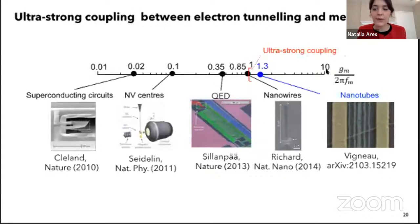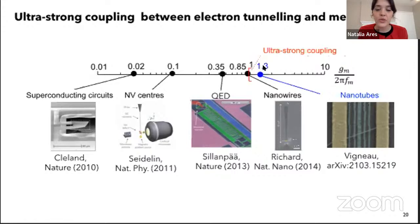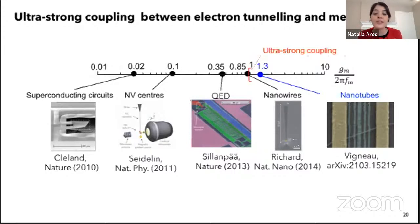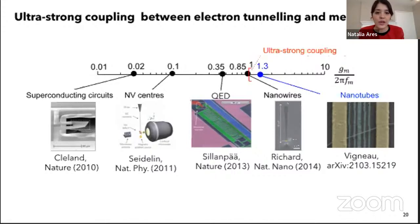We have calculated and since improved this coupling strength value. The key metric is the ratio of the coupling strength to the mechanical frequency, and this puts us in the ultra-strong coupling regime. This is great news because it means this regime is promising for applications in quantum information processing, high-precision sensors, cooling of mechanical modes, transfer of quantum states to mechanical motion, and exploration of foundational quantum mechanics.